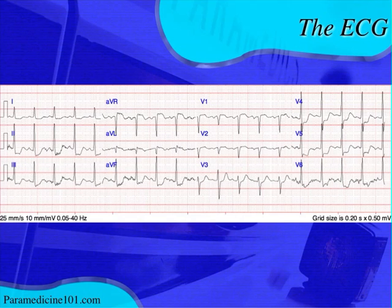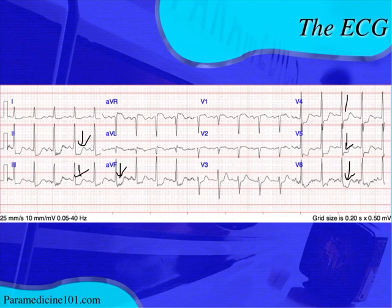And do we see ST changes? Let's take a look at this — and you certainly do. I think everybody would notice that you see ST depression in almost every lead: lead two, lead three, AVF, over here on the low lateral leads V6, V5, V4, maybe a little bit in V3. V2 is kind of flat, and then V1 looks maybe a little bit elevated. AVR looks elevated, and AVL maybe looks a little bit elevated as well. Lead one looks depressed.